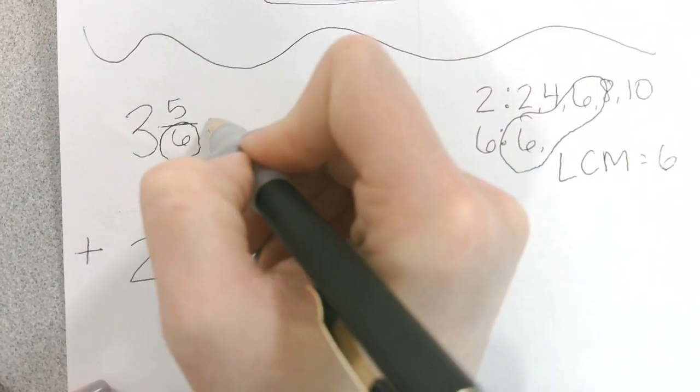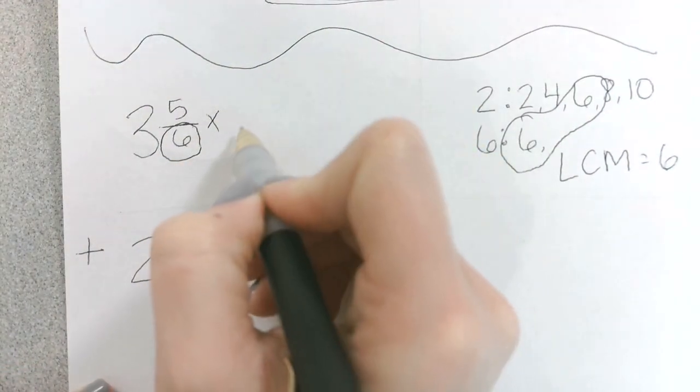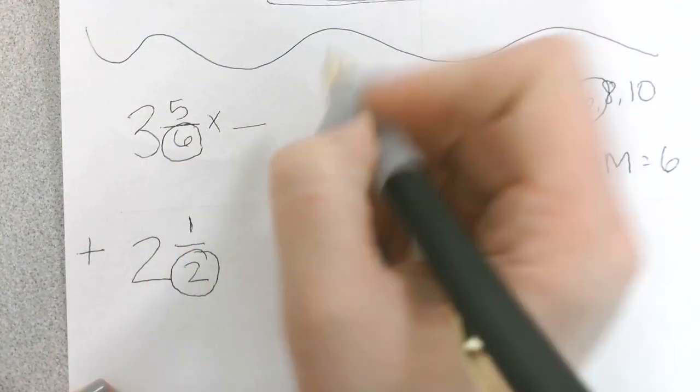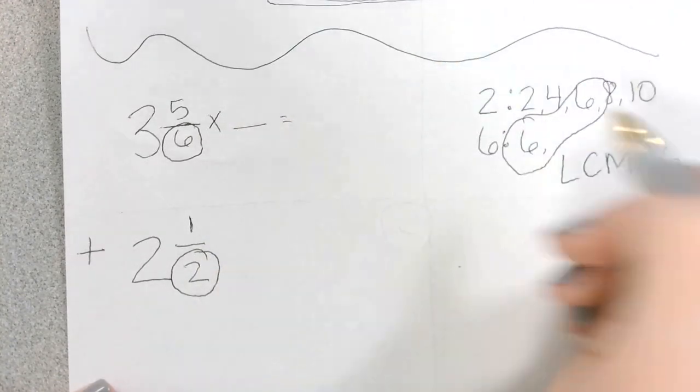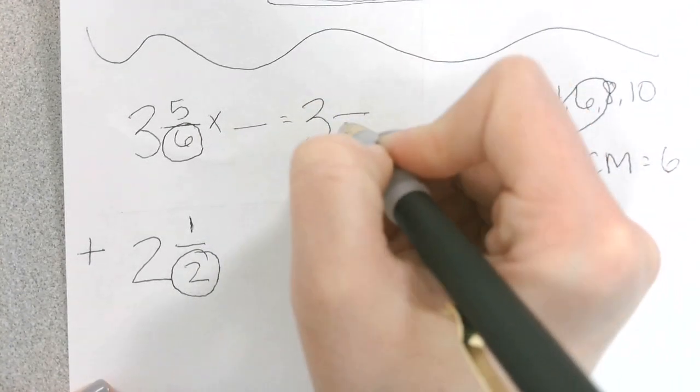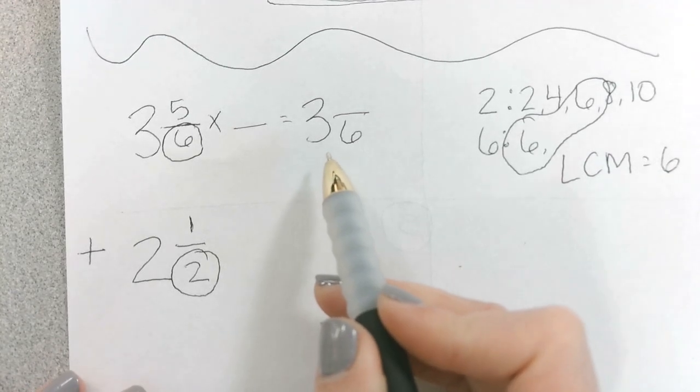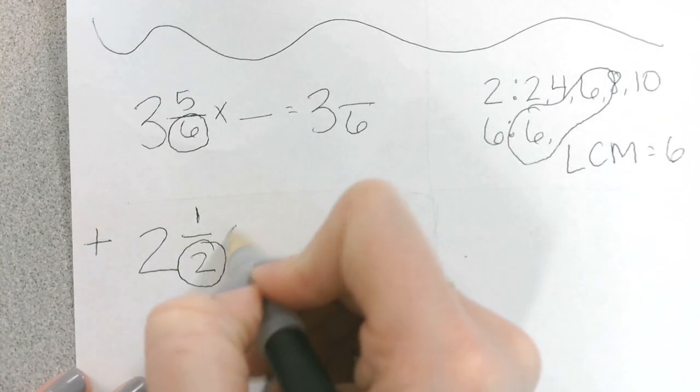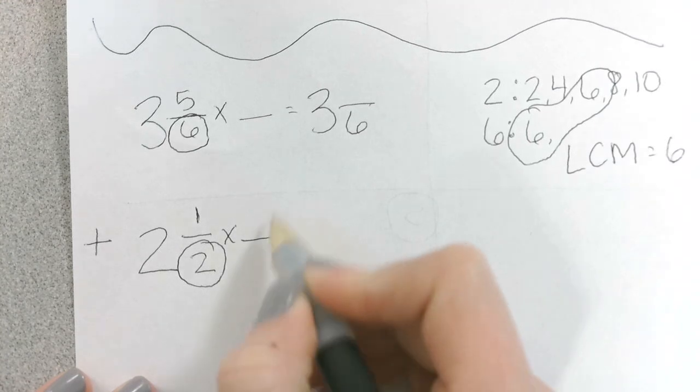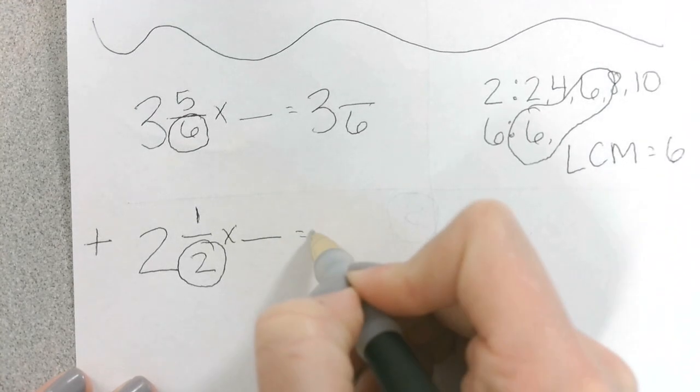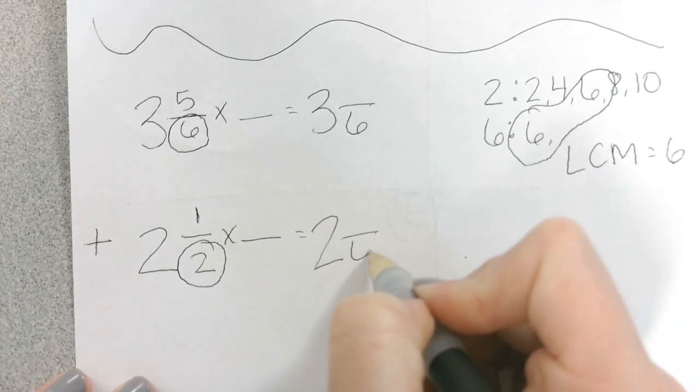Okay. Now let's rewrite these fractions. So we've got to multiply the fraction by something equivalent to 1 to equal an equivalent fraction with a denominator of 6. And I'm going to go ahead and bring that whole number over so that I don't forget it at the end. Same thing down here. We're multiplying 1 half by something equivalent to 1 to get a new fraction with a denominator of 6.